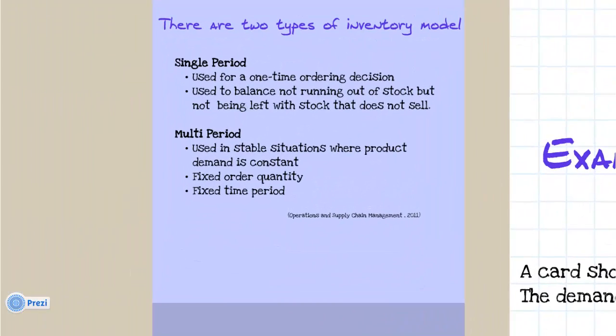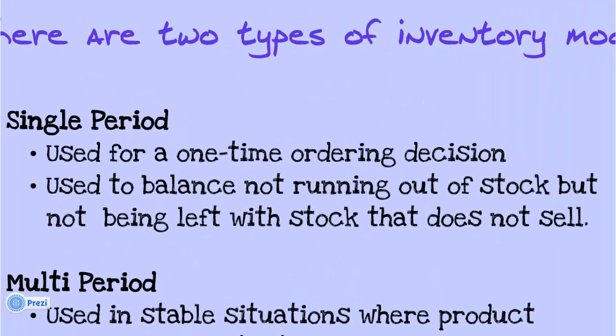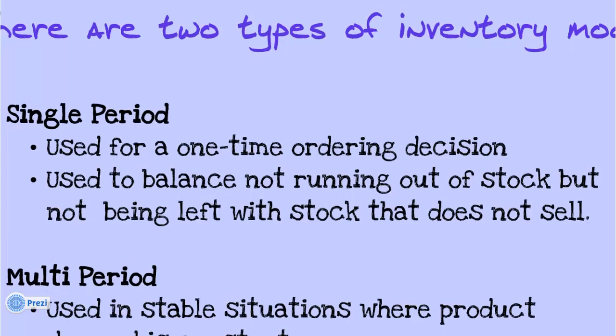There are two types of inventory model: the single period and the multi-period. The single period model is used for an ordering decision that only occurs once. Businesses use the model to balance not running out of stock but not being left with stock that does not sell.